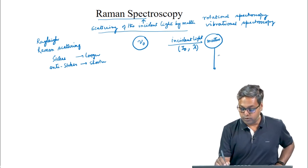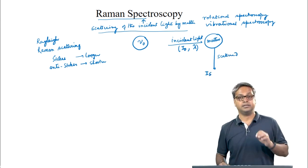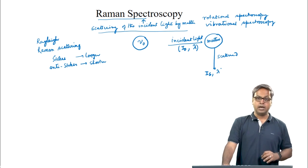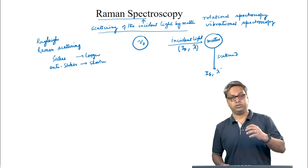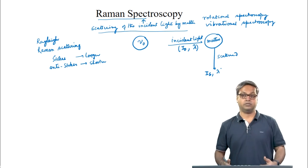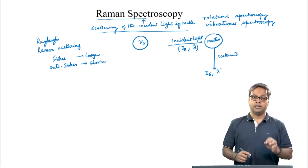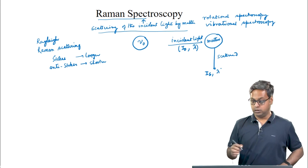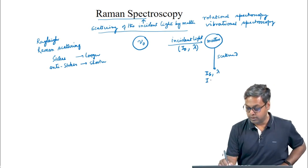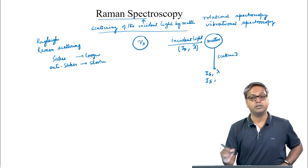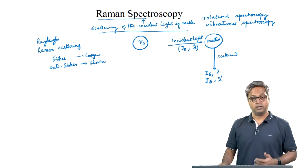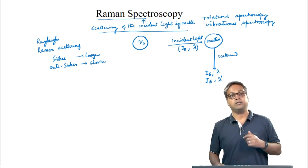For the scattered light, we can write Is as the intensity and lambda as the wavelength. The change of direction of photons is known as scattering of the radiation. Raman showed that scattered frequencies other than the incident frequency are also present — that is, the intensity of the scattered light can also have wavelengths other than that of the incident light. This is known as Raman scattering.